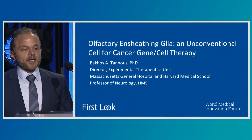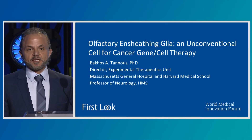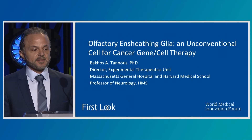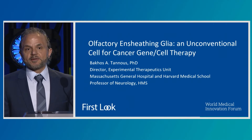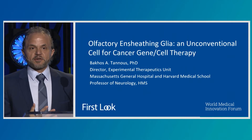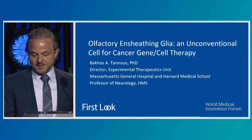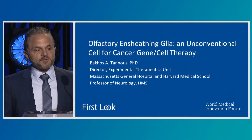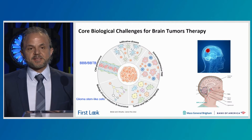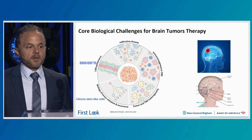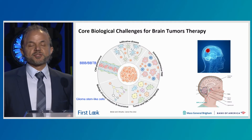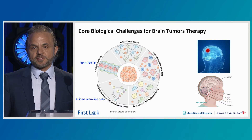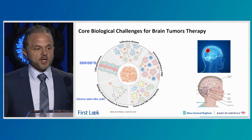Today I'll be talking to you about an unconventional cell for cancer gene and cell therapy, called the olfactory ensheathing glia, or the olfactory ensheathing cells. Just before we discuss these cells, I'd like to remind you of the major biological challenges that we face when we treat cancer in general, and brain tumors in particular.